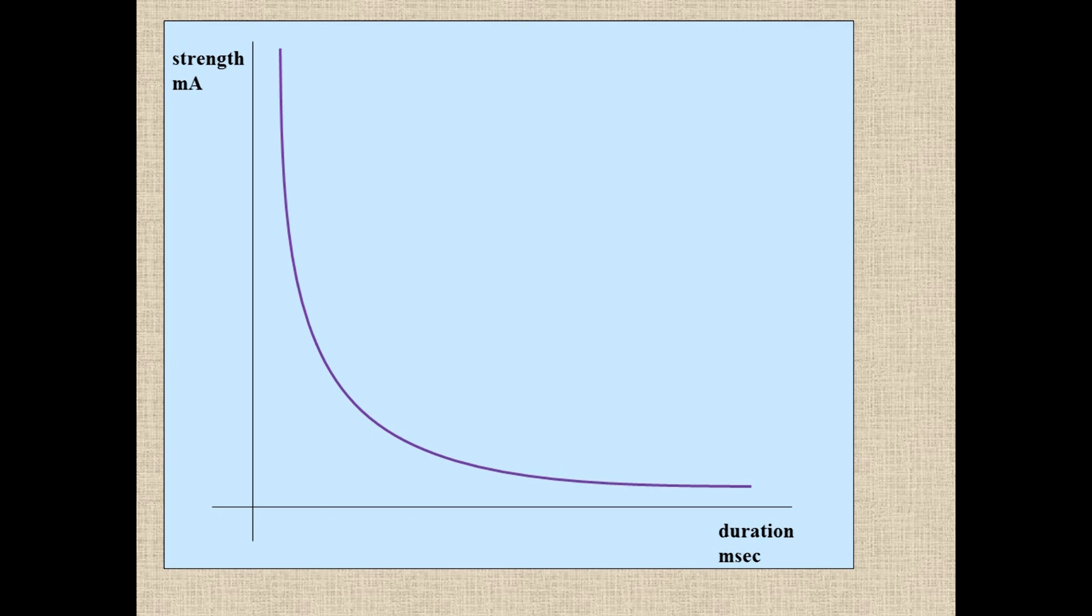If you don't get to the purple line, you won't get an action potential. So here, with a short duration, once you get to this amount of current, you've got your action potential. And that's a fairly typical strength duration curve. If you can reproduce this in an exam, it's going to help you explain a few things a lot easier than just trying to do it in words. So that's a standard strength duration curve.